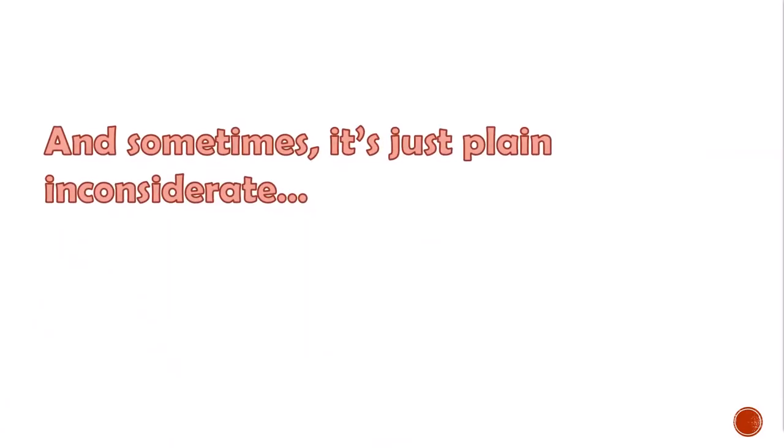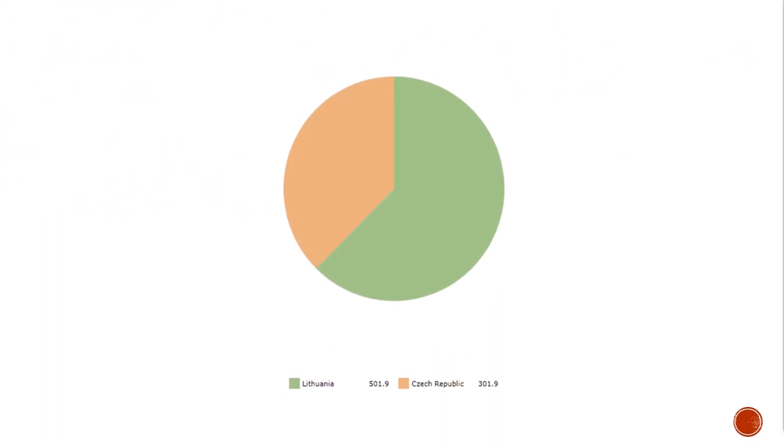Sometimes the problems with data visualization don't even rise to the level of deceit or intentional trickery — sometimes they're just plain inconsiderate. Consider this pie chart purporting to show the relative share of some unnamed commodity between Lithuania and the Czech Republic. Aside from the questionable decision to use a pie chart — generally considered anathema among data professionals — we may not notice anything wrong with it. Unless, of course, you happen to have protanopia, or red colorblindness. In that case, all you see is a circle.